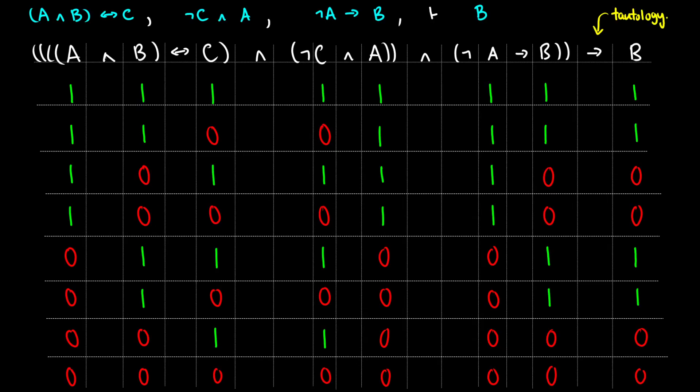In order to determine if an argument is valid, what we have to do is build a truth table where the premises are joined by ands and the conclusion is an arrow. So if we have A and B if and only of C, not C and A, not A arrow B, and that proves B, then we have to show that whole expression arrow B is a tautology. I have a grid up here because there's just a ton of numbers, so it might look a little bit uglier, but hopefully this helps with organization.